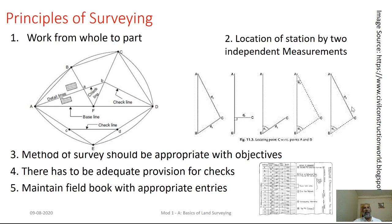Whenever we deal with surveying as an operation, we deal with two basic principles. The first principle is called 'to work from whole to part.' As you see, this is the total area under consideration. In order to survey that particular area, we establish a control network A, B, C, D, E, A. The entire area to be surveyed is expressed in relation with this control network.